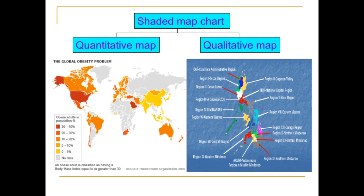In a quantitative map, data is expressed as a numerical value. Look at the example of a quantitative map which shows the percentage population of obese adults. In a qualitative map, data is in the form of a quality, and expresses the presence or absence of the subject on a map.